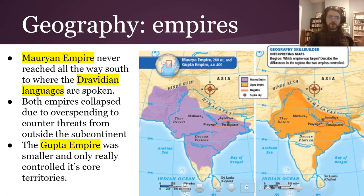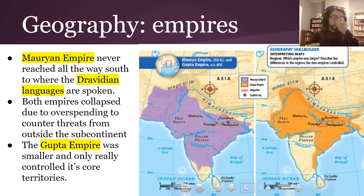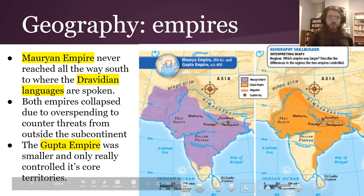Here's a comparison of those two empires, just so you have a sense of how expansive they were. The Mauryan Empire was huge and got very, very large — we have pretty clear evidence of where it was — but they never reached all the way to the south, where those Dravidian languages are spoken.